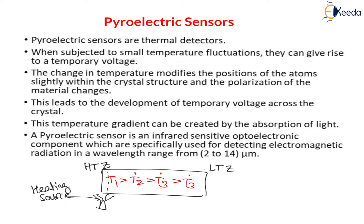This temperature gradient can also be created by absorption of light. In a solar water heater, for example, we are heating water by absorbing sunlight — that is creating a temperature gradient by light absorption. Furthermore, the pyroelectric sensor is an infrared-sensitive optoelectronic component, specifically used for detecting electromagnetic radiations in the wavelength range of 2 to 14 micrometers. Only when the radiation range is between 2 to 14 micrometers can this pyroelectric sensor detect the light.